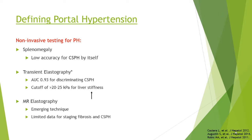Splenomegaly, like thrombocytopenia alone, has low accuracy for portal hypertension — there are other causes. Some patients with fatty liver disease without cirrhosis can have splenomegaly on imaging. When we see these findings, we tend to do further testing, especially for patients being considered for lung or heart transplant, to determine if they have advanced fibrosis, cirrhosis, or portal hypertension.